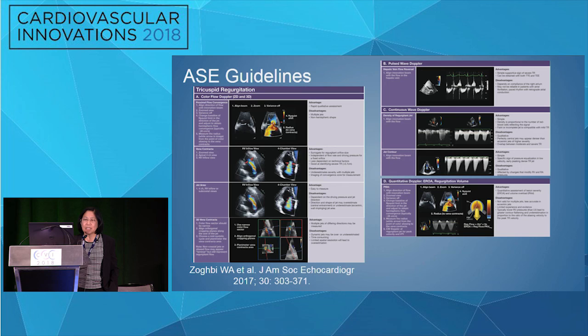Clinicians rely on jet areas since the guidelines tell us to do so, but we'd like to move away from that. Quantitation relies on proximal isovelocity surface area — a single linear measurement of the radius of the proximal flow — which in a time-varying jet is not really a reliable approach.